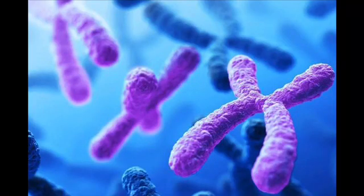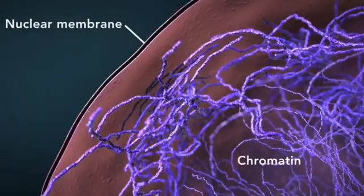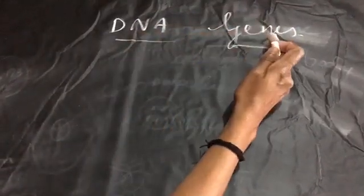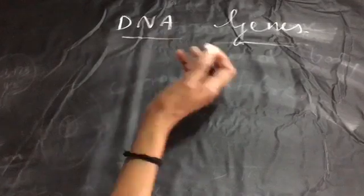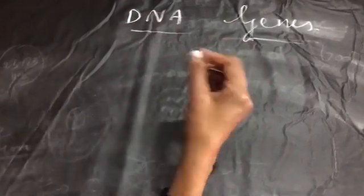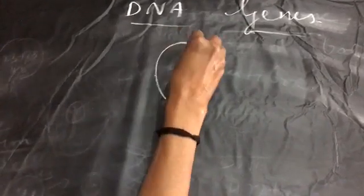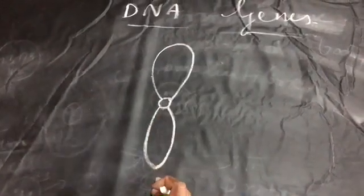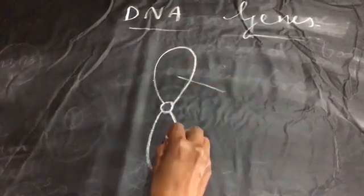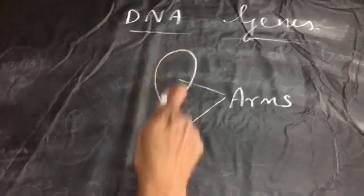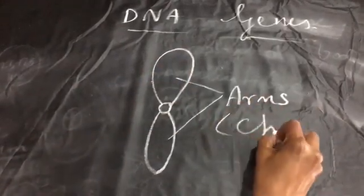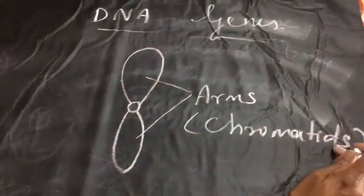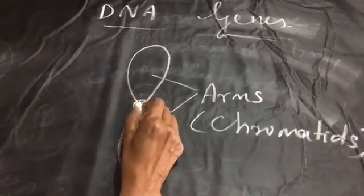Now let us move towards genes. To learn about DNA and genes, you should first understand the structure of a chromosome. A ribbon-shaped chromosome has two arms, also called chromatids. One chromosome has two arms or chromatids — these terms are not in your NCERT book. The point where the two arms meet is called the centromere.